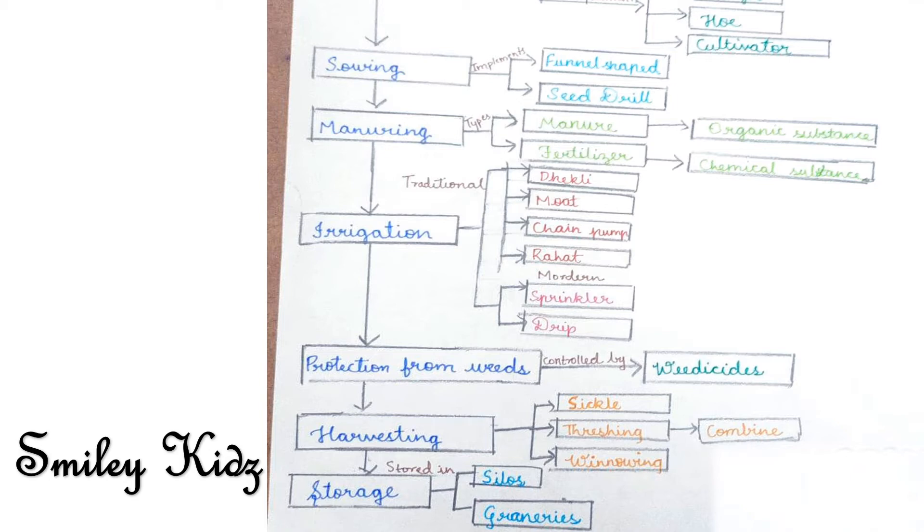The agricultural implements used in the process of sowing are traditional tool and seed drill. The traditional tool is funnel shaped. The tool used traditionally for sowing seeds is shaped like a funnel. The seeds are filled into the funnel and are passed down through two or three pipes having sharp ends.